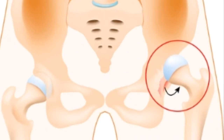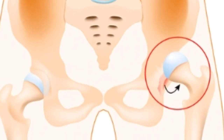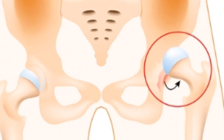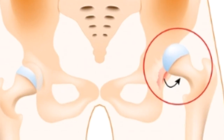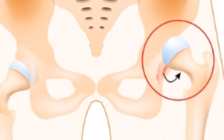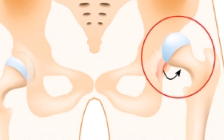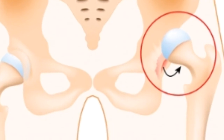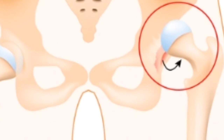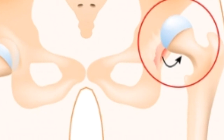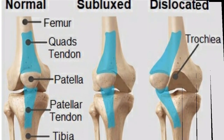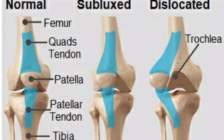The head of the femur meets the acetabulum of the hip joint to form the joint. On the other side, you can see the head of the femur dislocated from its position — this is the example of dislocation. Now we will see the example of subluxation and dislocation using the patella.